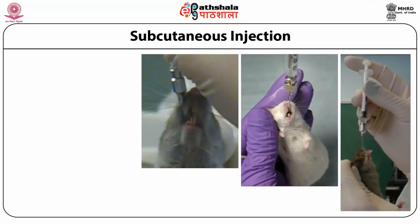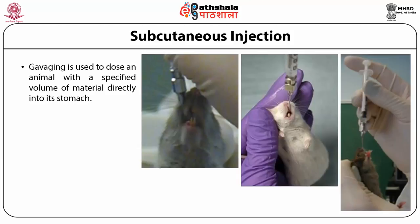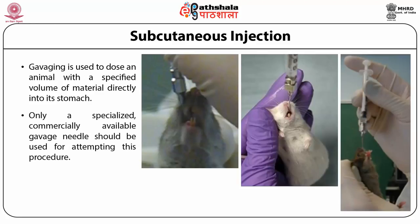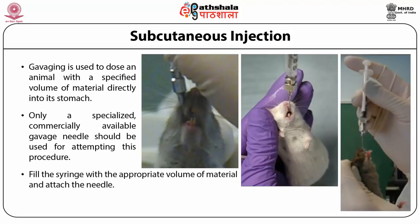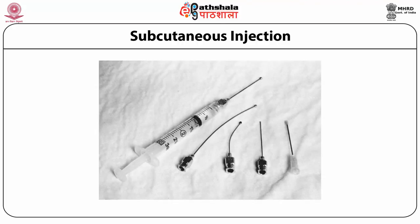Another important procedure is gavaging — giving drugs orally. We use a commercially available gavage needle, also called an oral needle, fitted with an appropriate syringe. The oral drugs to be delivered can be administered using this gavage needle. The tip of the needle is blunt with a round edge so it does not harm the esophageal region.